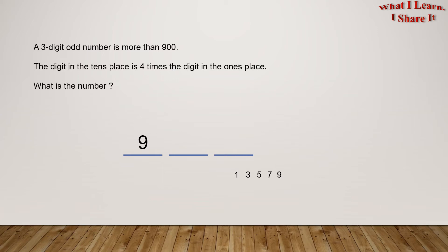The digit in the tens place is four times the digit in the ones place. The digit in the tens place will be four times one is four.